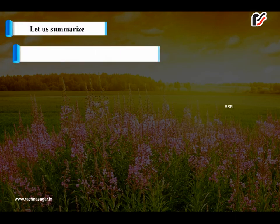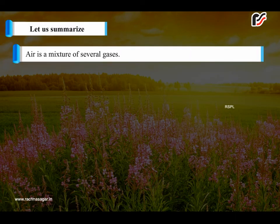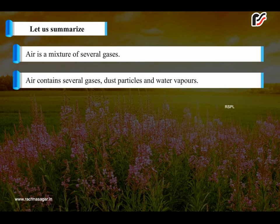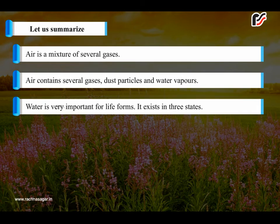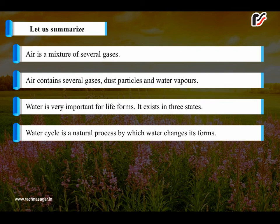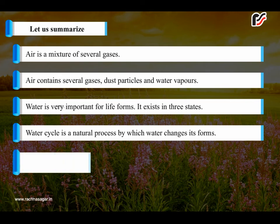Let us summarize. Air is a mixture of several gases. Air contains several gases, dust particles and water vapors. Water is very important for life forms. It exists in three states. Water cycle is a natural process by which water changes its forms.